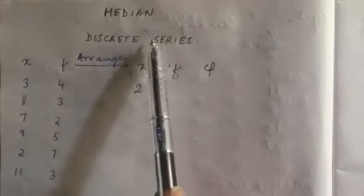Namaste, students. We will be continuing with the chapter on measures of central tendency. In the previous class we started with median and covered median for individual series. Today we will be finding median for a given discrete series.